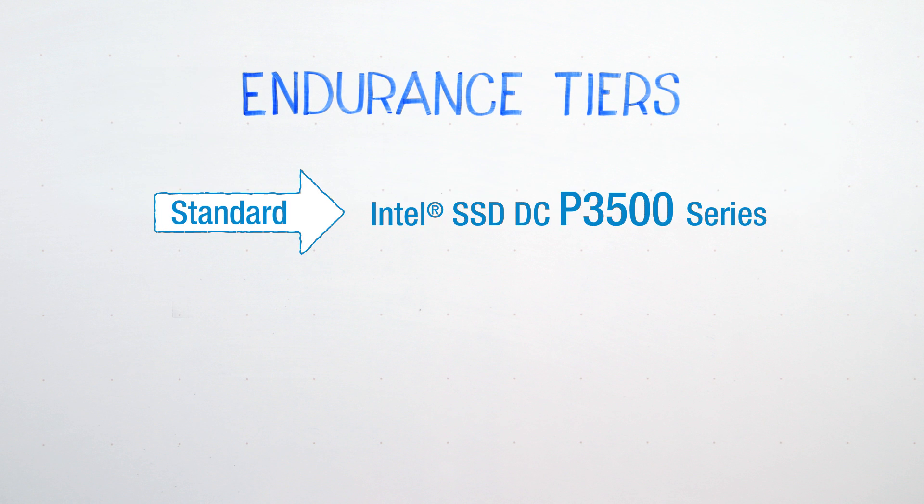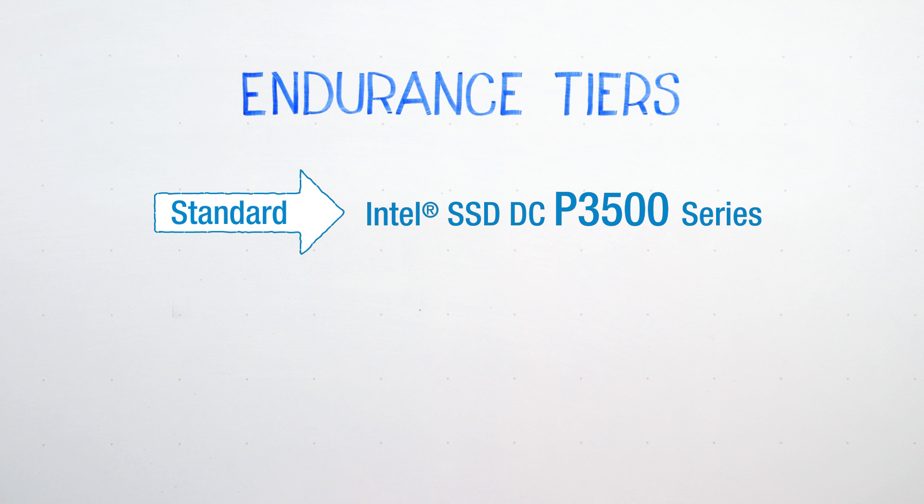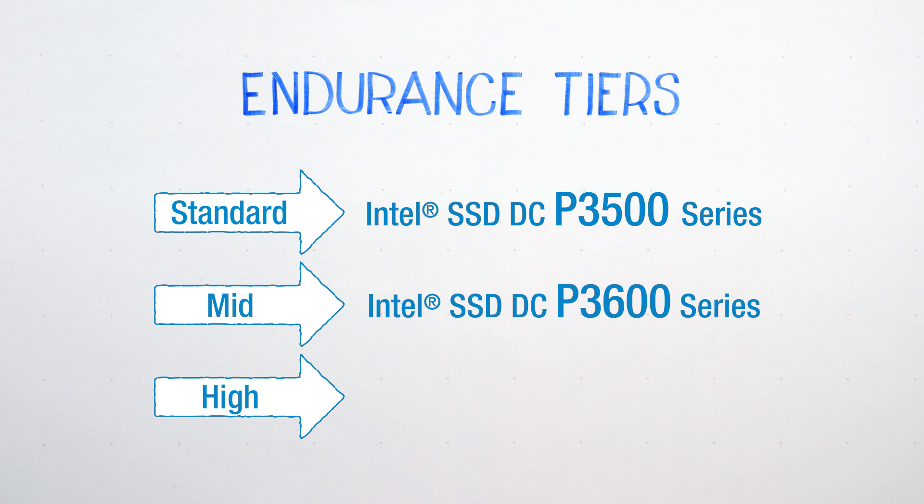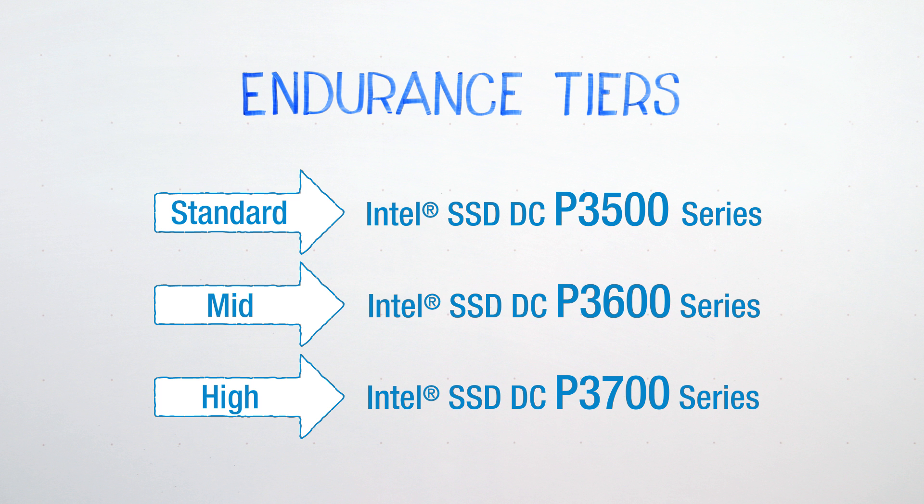That might be used for something where the data is more static and you're doing mostly read-intensive operations. Then we have a mid-tier of endurance that might be good for virtualization, and a high endurance tier for things like database logging and really intense applications that are going to write a lot of data. The three different tiers enable you to choose the right SSD for your workload, ultimately giving you the best efficiency and best total cost of ownership.